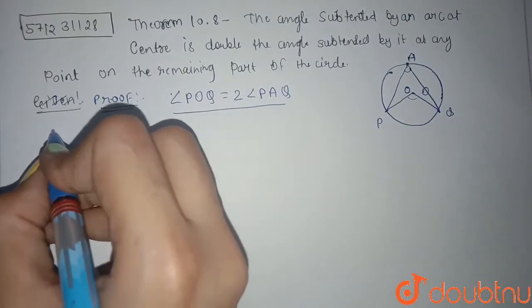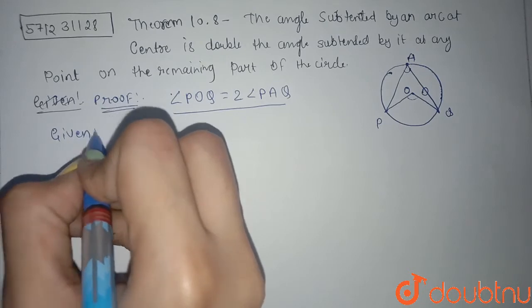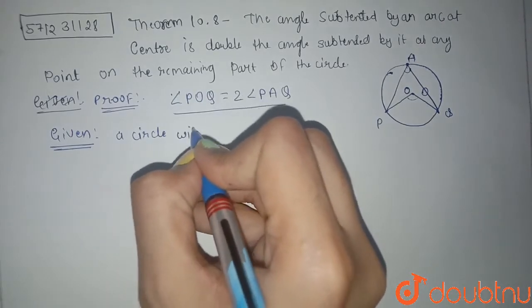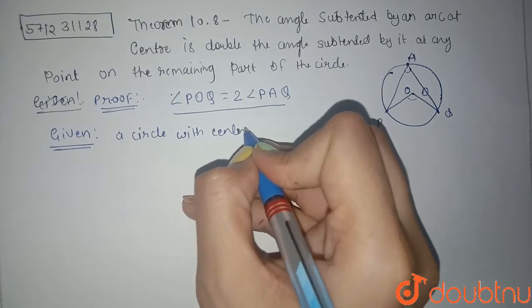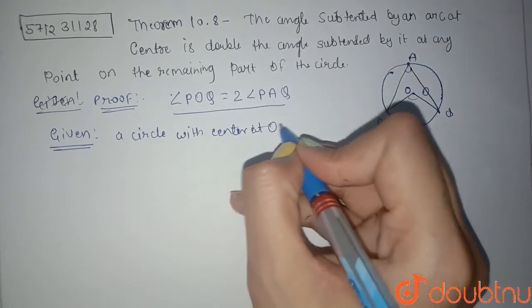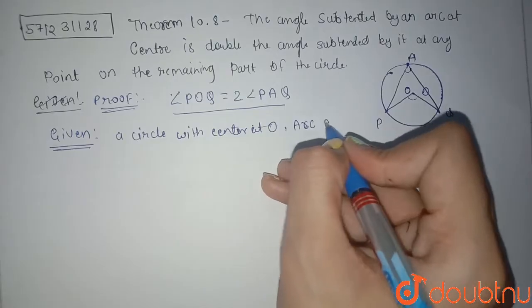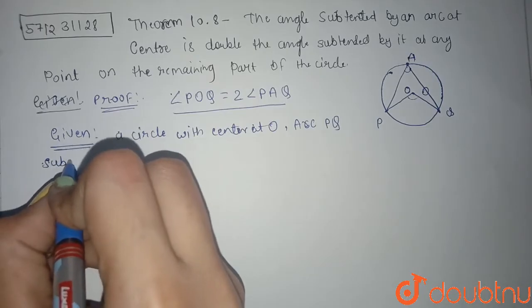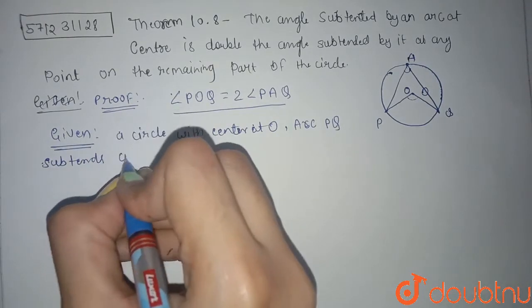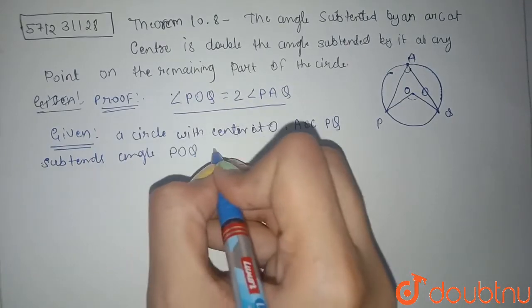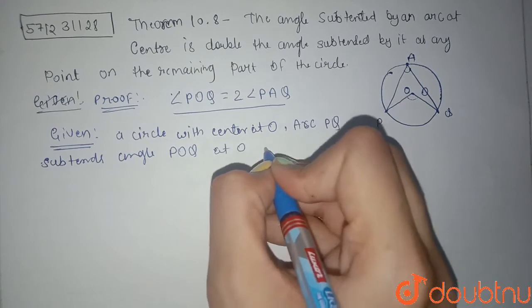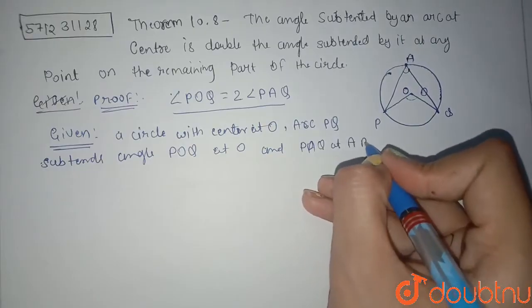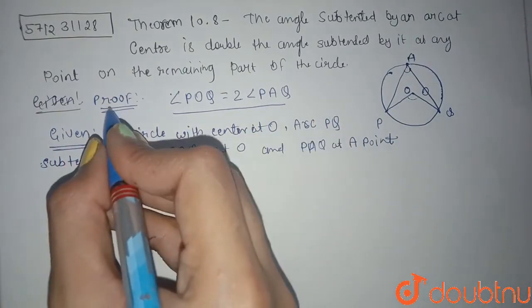Let me write first: Given - a circle with center at O, arc PQ subtends angle POQ at O and angle PAQ at point A. We have to prove angle POQ equals 2 times angle PAQ.